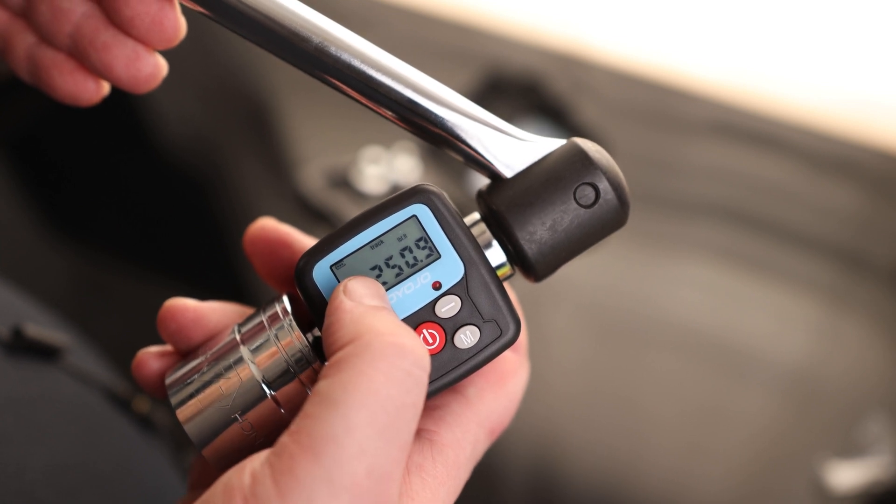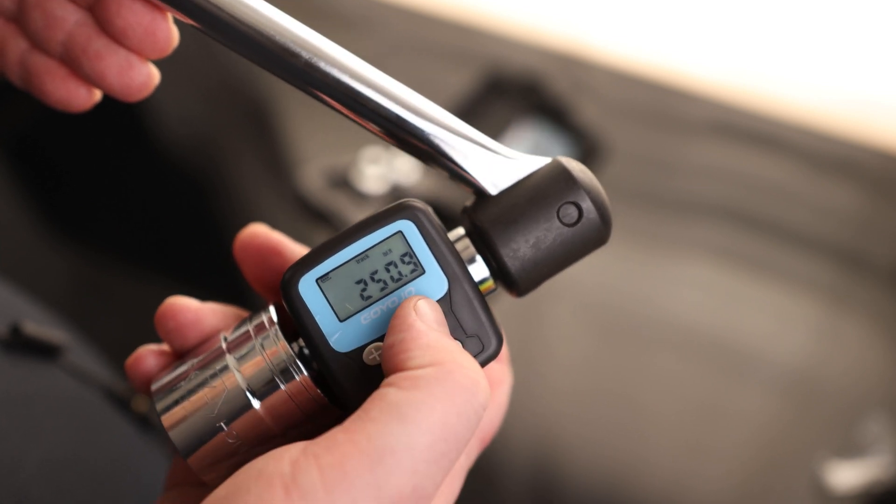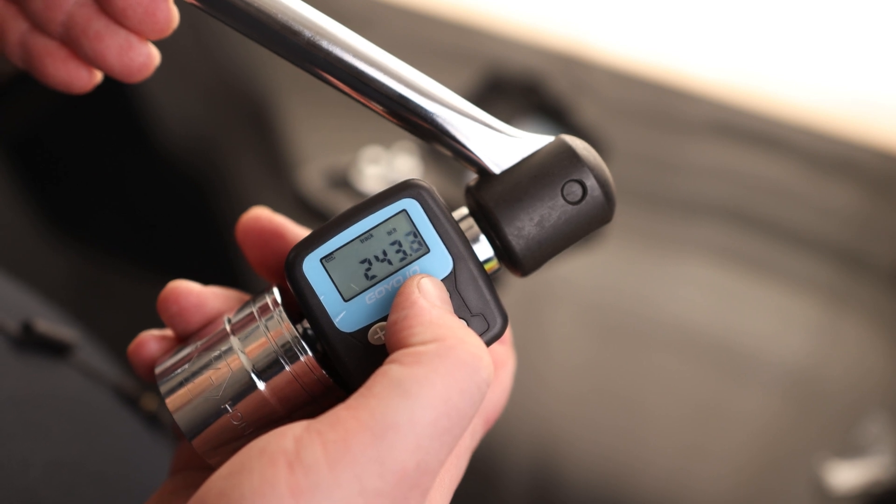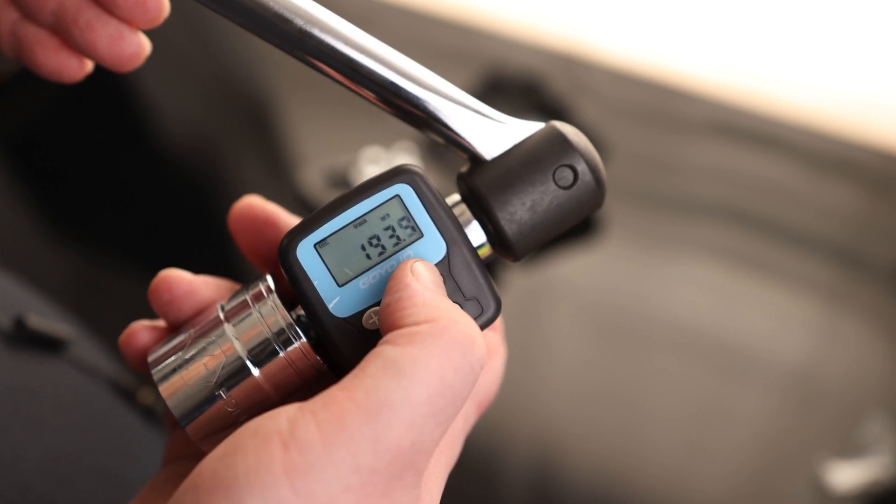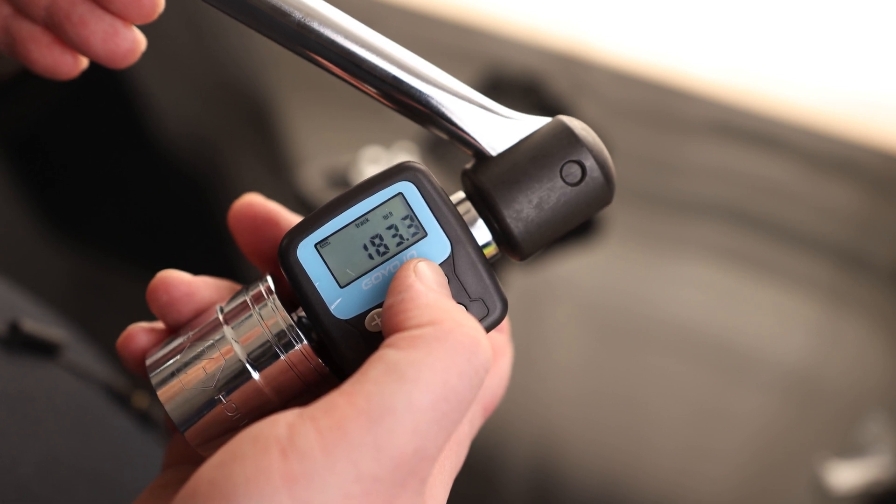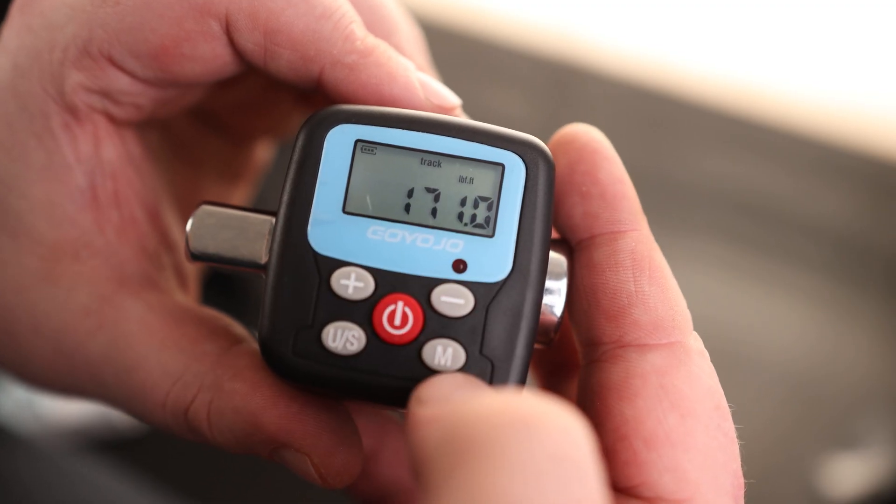This reading is going to give us an alarm when we get to that measurement. If we want to change that measurement, all we have to do is hold the minus or plus button. Because this goes up to 250 foot pounds, this is going to be for very heavy applications. We can see on the top we are in track mode.